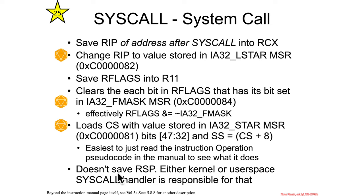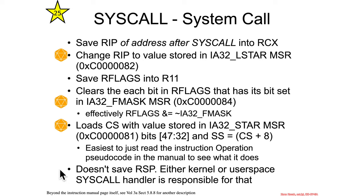An interesting thing is that normally you would expect RIP and CS to combine with RSP and SS to define where your new code and new stack are. While syscall does define a stack segment, it doesn't actually define a way that RSP is saved. So it's ultimately up to either user space before entering kernel or kernel space after entry to save and restore RSP. If the kernel saves it, the kernel should restore it; if user space saves it, user space should restore it.